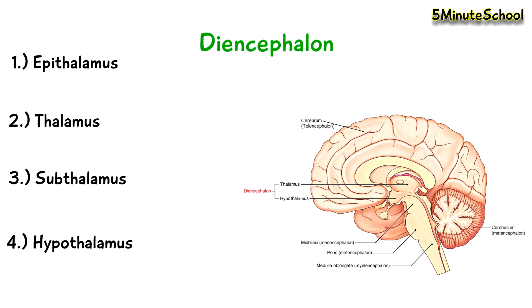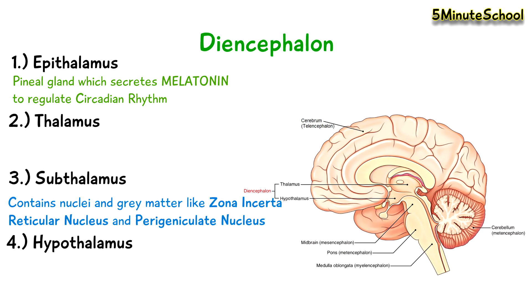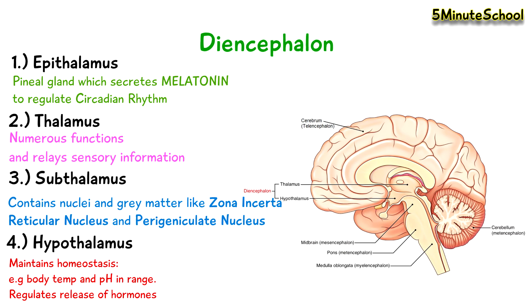A separate video will be made to cover the diencephalon in more detail. The epithalamus contains the pineal gland, which releases melatonin to help with circadian rhythm or your sleeping pattern. The subthalamus contains nuclei and grey matter like the zona incerta, reticular nucleus, and the perigeniuculate nucleus. The thalamus has numerous functions including relaying sensory information, and the hypothalamus acts to maintain homeostasis, ensuring that things like body temperature and blood acidity are kept within a certain range by regulating the release of certain hormones.